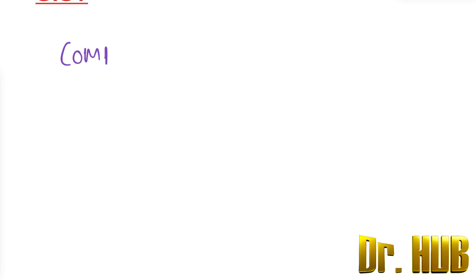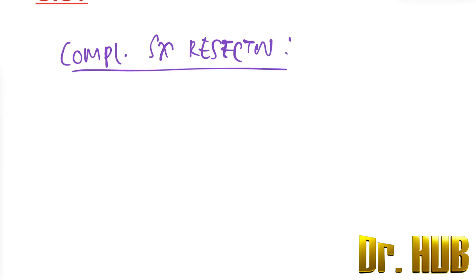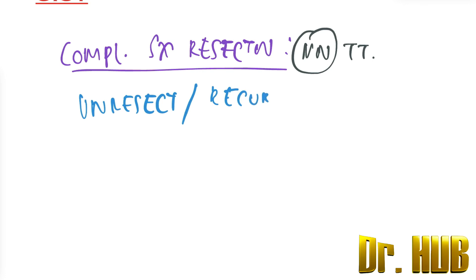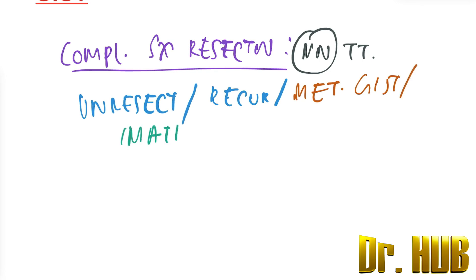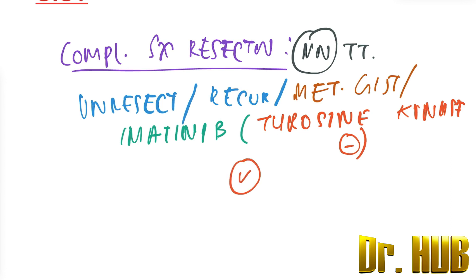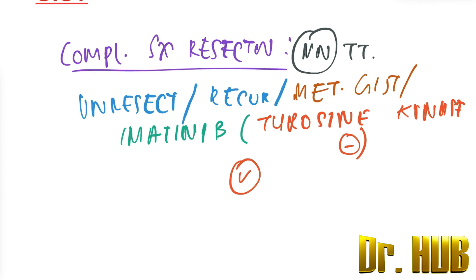Complete surgical resection is the mainstay treatment. For unresectable, recurrent, as well as metastatic GIST, imatinib is used. Imatinib is a tyrosine kinase inhibitor.